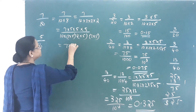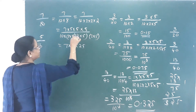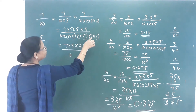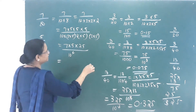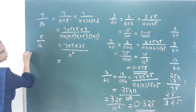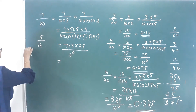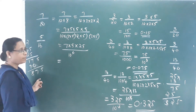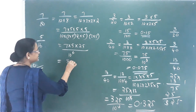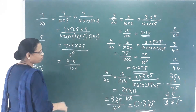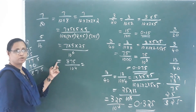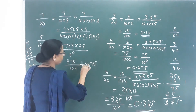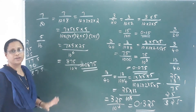7 into 5 into 5 into 5 gives 7 into 125 equals 875. With 10 raise to 4 in the denominator — 1, 2, 3, 4 zeros. Then 875 in decimal form.